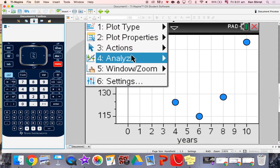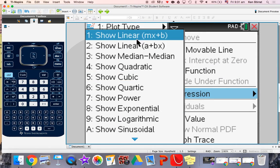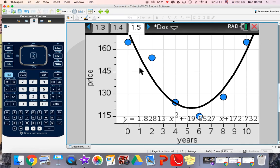So, menu. What was it? Actions or analyze? Analyze. Regression. And you have a whole bunch of models to choose from. We know it's quadratic. And there it is.